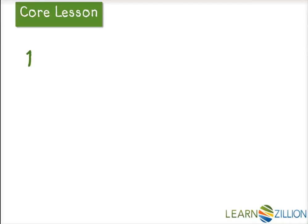Those three dates together help me understand as I'm reading that this text is organized by time. As I go through it, I can keep adding to it and see how things have changed with the bicycle over time. See if you can tell all of the steps that I did in figuring that out. First, I skimmed the text and looked for key things like dates in this instance.